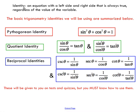So first of all, what is an identity? An identity is just an equation with a left and right side that is always true regardless of the value that you put in for the variable.